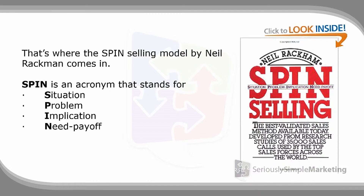This is the book — you can find it on Amazon, it's a really great read. What it comes down to is these researchers did a bunch of interviews and analyzed all the different questions that salespeople ask. They found there were four different types: situation questions, problem questions, implication questions, and need payoff questions — and of course those letters S, P, I, N are where SPIN Selling came from.